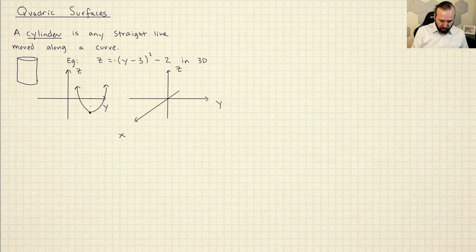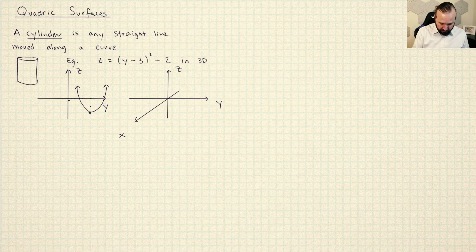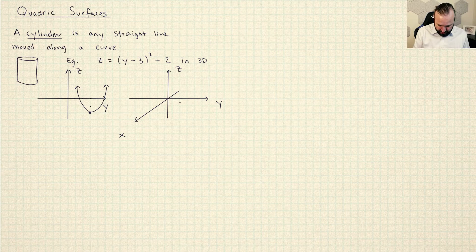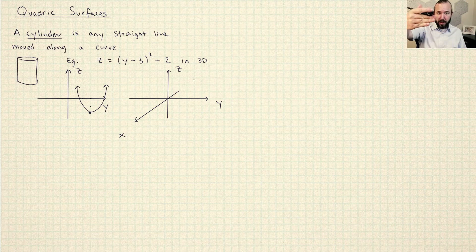So now what I need to do is take this graph of the parabola that has been shifted out the positive Y and down on the Z. And then it's that same parabola everywhere forwards and backwards down the X axis.